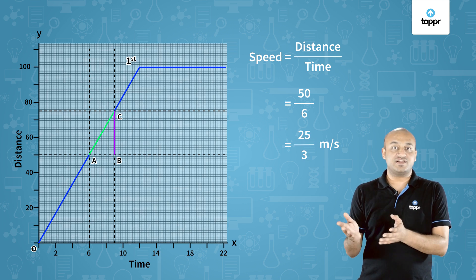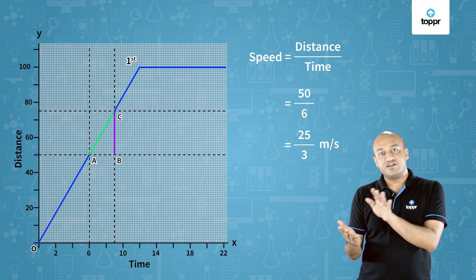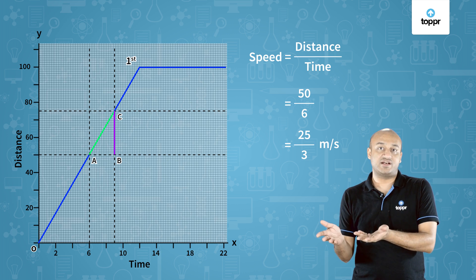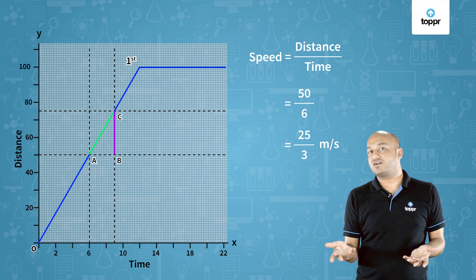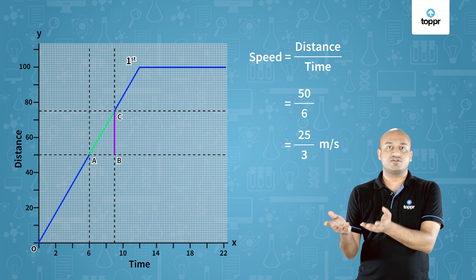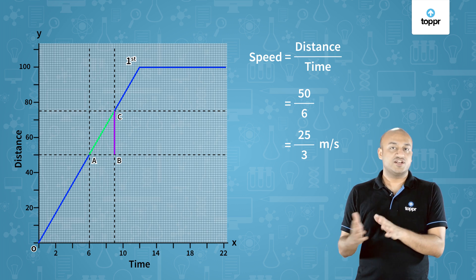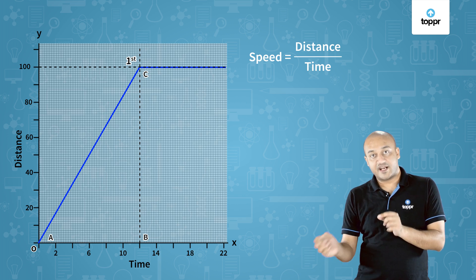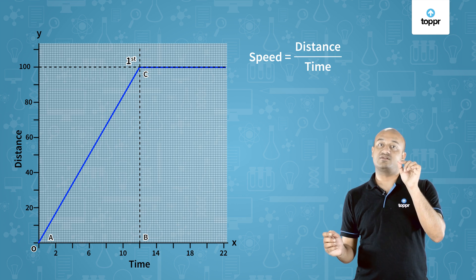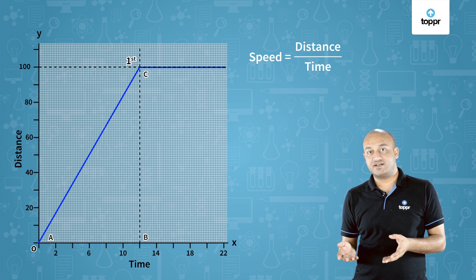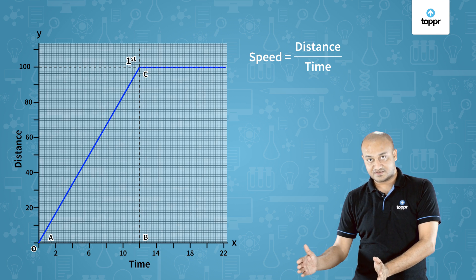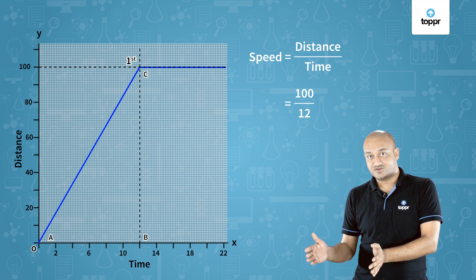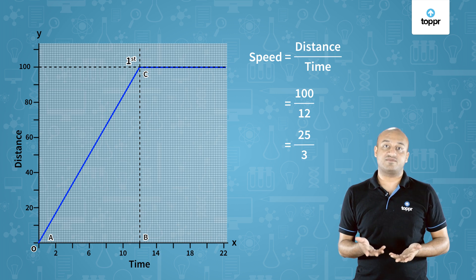The section AB we chose could have been a smaller or bigger section — we would still get the same speed result because we assume all runners are running at a uniform speed. Let's choose the entire journey: point A goes to the origin and point B is at 100 meters. Calculating the speed gives 100 meters divided by 12 seconds, which comes out again as 25 by 3 meters per second.